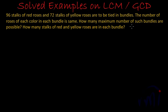So what we have to find? Yes, we have to find the HCF or the GCD of 96 and 72. And what are we going to do? We're going to use the division method to find the greatest common divisor or highest common factor of 96 and 72.